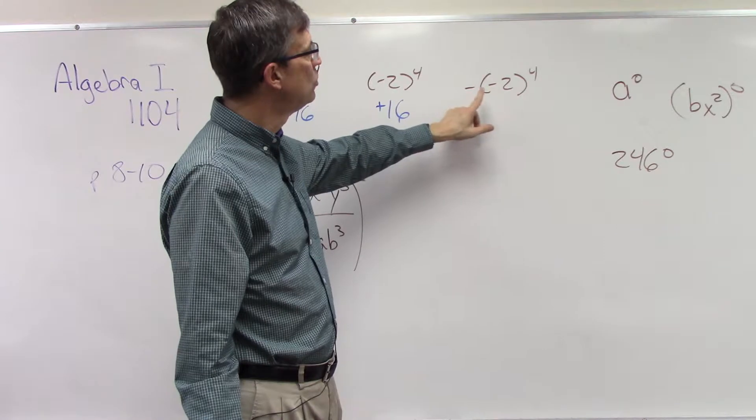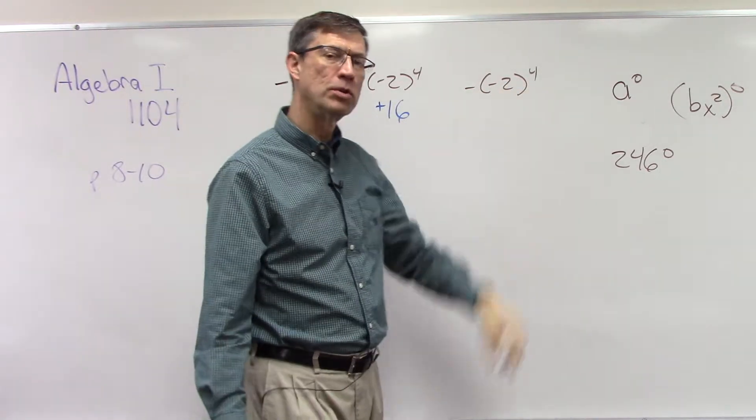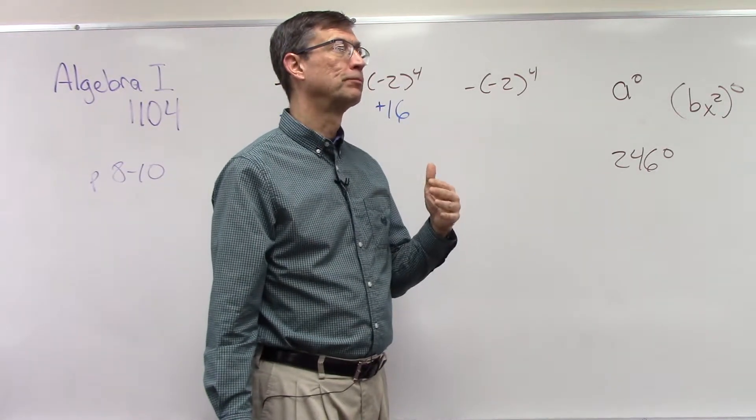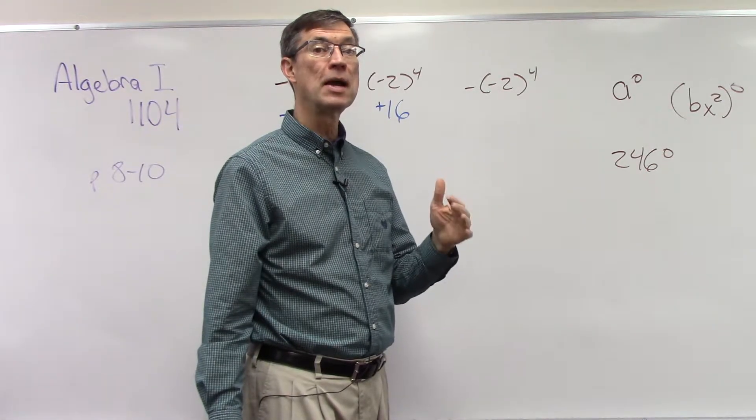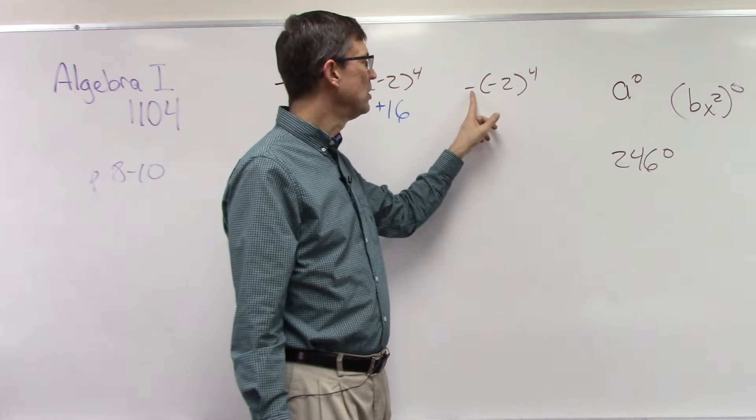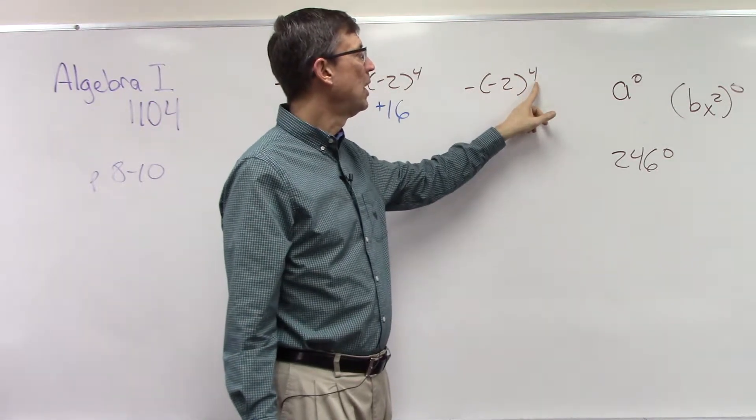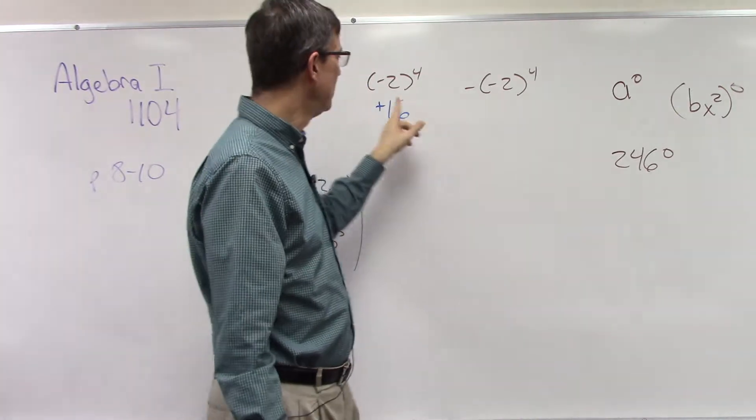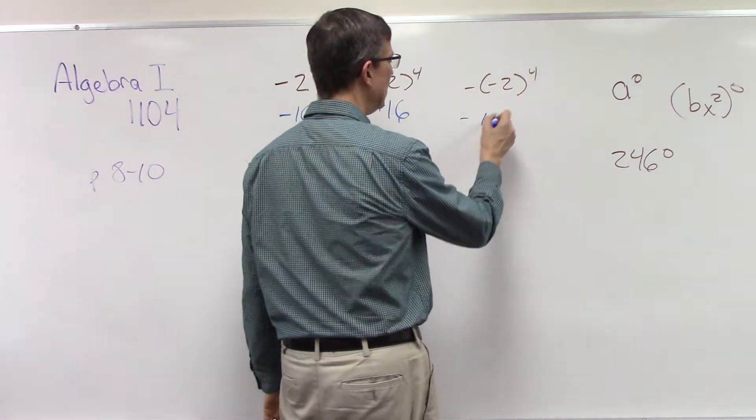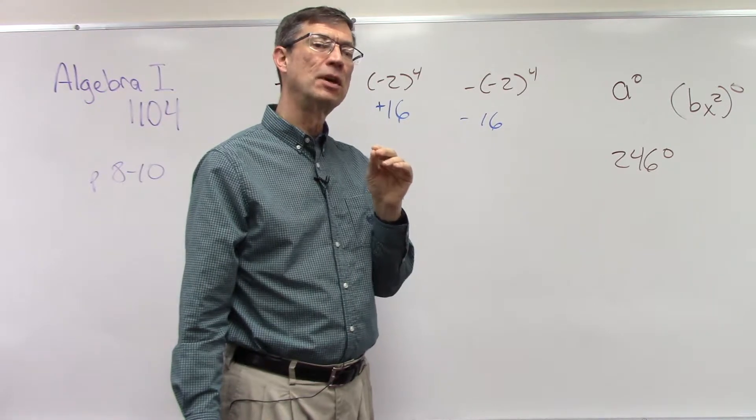This, another tricky one, we do not take this negative out here and change this. We first deal with the exponents. Do you remember the order of operations says please excuse my dear aunt Sally? So parentheses first, then exponents. And then we do the multiplying, dividing, and adding and subtracting is the last step. This is like an addition-subtraction step right in front of it. So this is the last thing we do. We first apply the 4 to the parentheses, like we did here. So this part becomes positive 16, and then the negative kicks in. Just think about the exponent affects the thing that it's directly attached to.